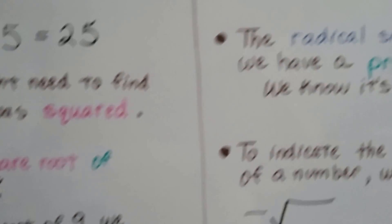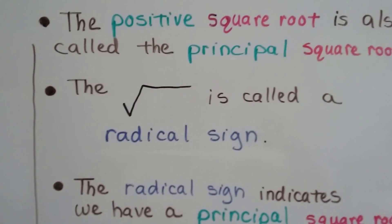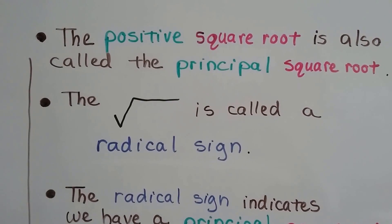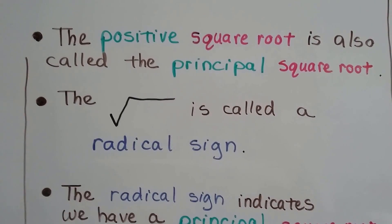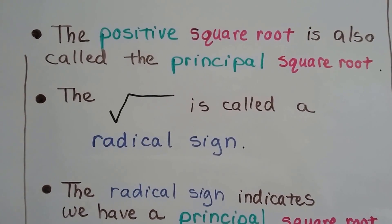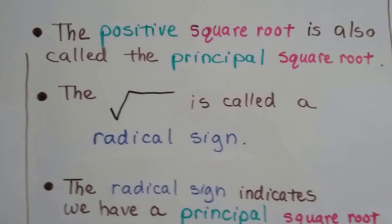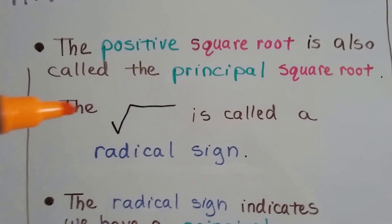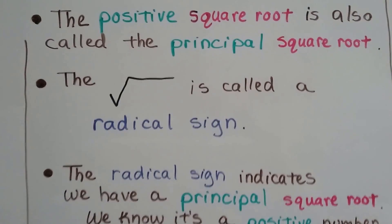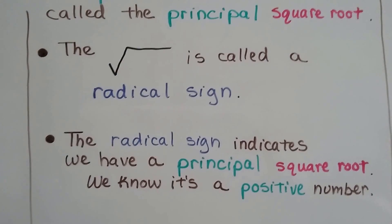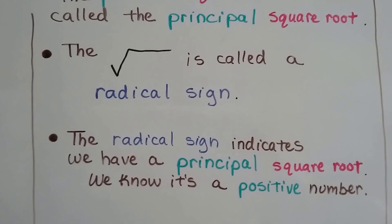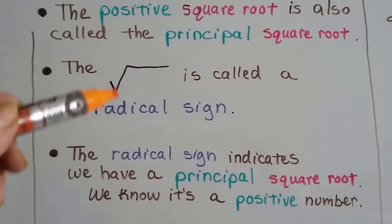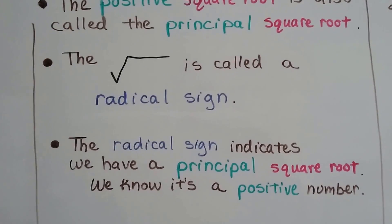The positive square root is also called the principal square root. The positive square root is also referred to as the principal square root. When you see this symbol — it looks like a check mark with a line — this is called the radical sign, or radical symbol. The radical sign indicates that we have a principal square root, so we know it's a positive number.